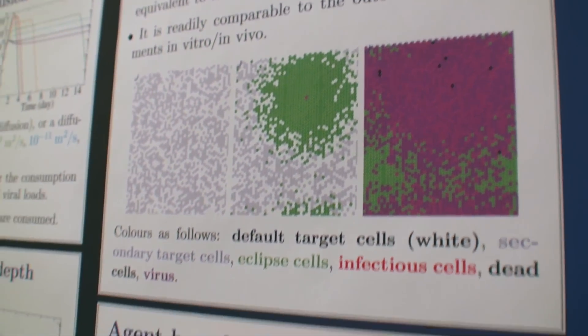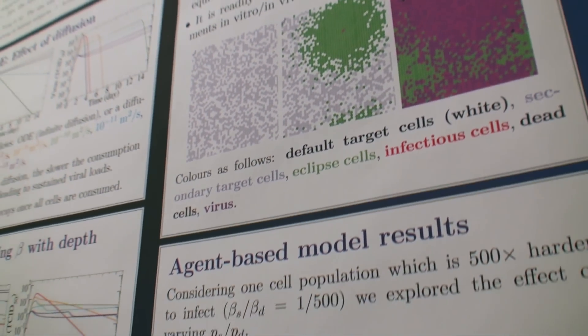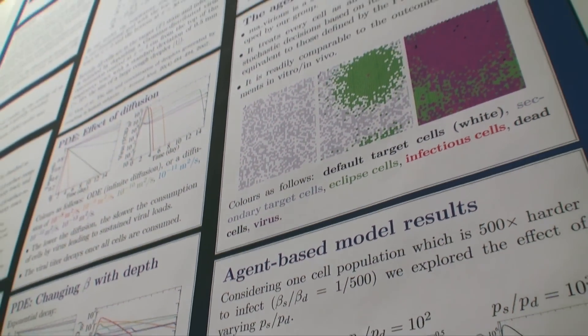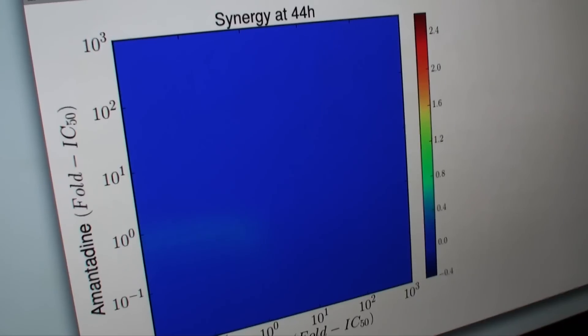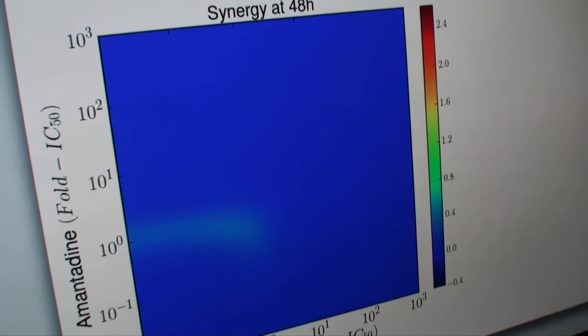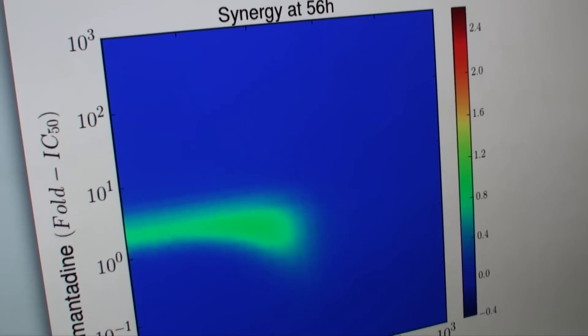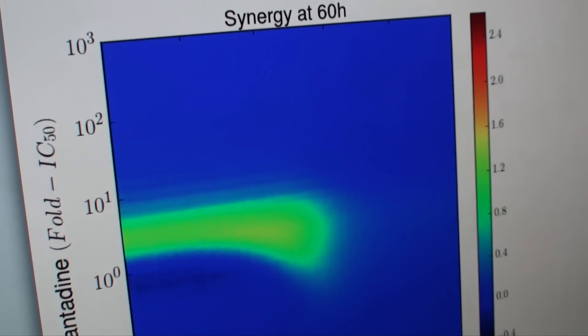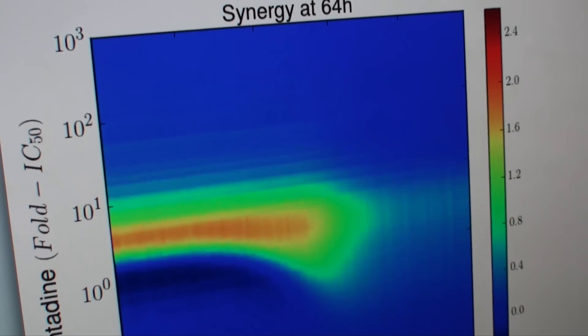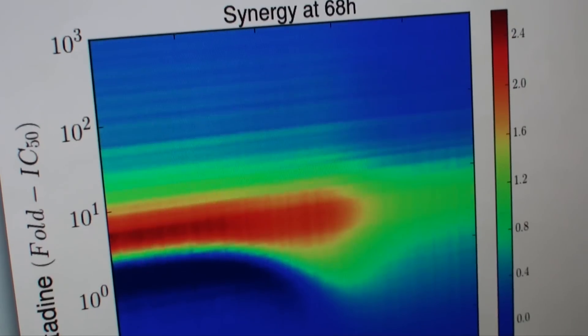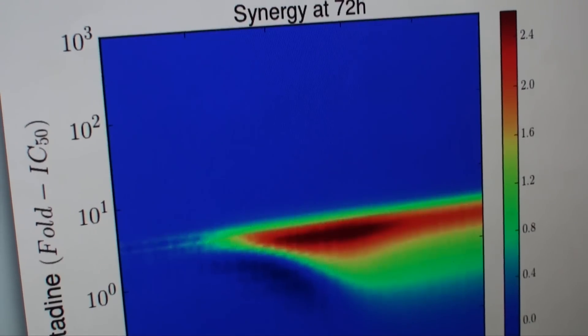Our models have gotten good enough now that we can take experimental data, fit it with the model, and extract new knowledge about the system — like the rate of virus production, how long the cell lived for. You could apply that to figure out what's going on with one strain compared to another strain.